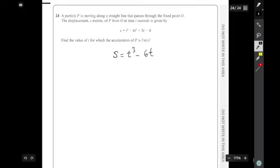equal to t³ - 6t² + 5t - 4, then that means the velocity formula is going to be 3t² - 12t + 5, and that means the acceleration formula is going to be 6t - 12.